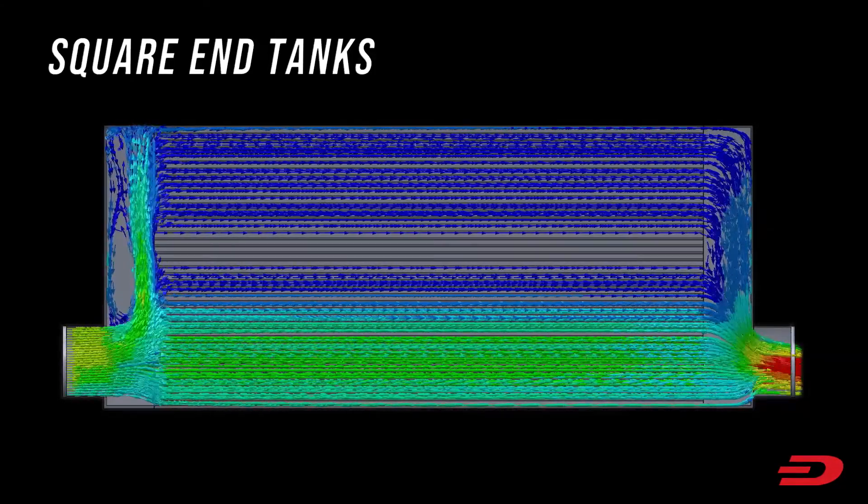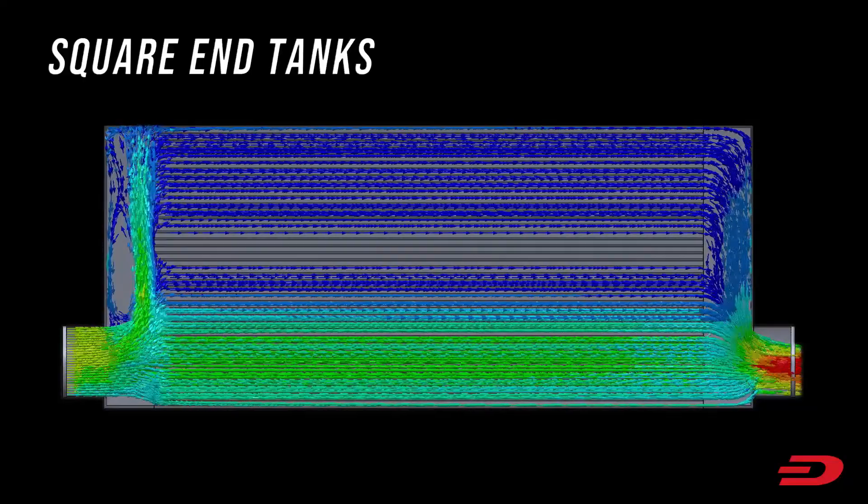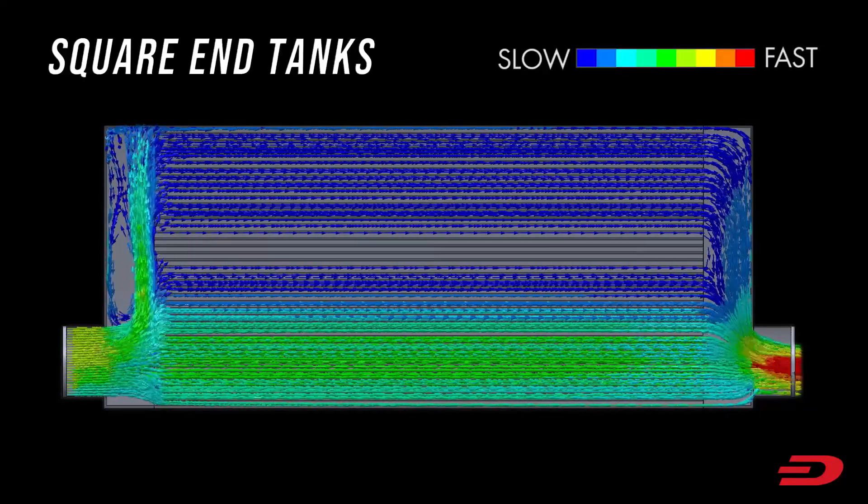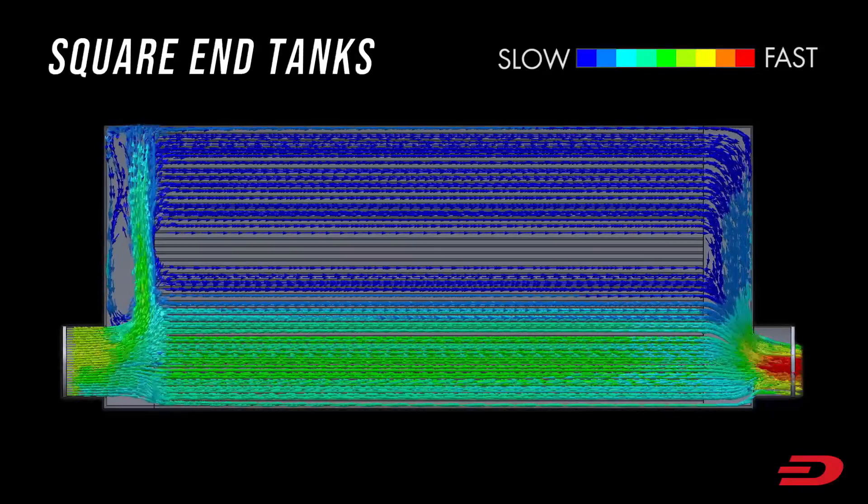The colors in this CFD simulation represent the speed of the air traveling through the intercooler. Red is fast, and blue is slow.